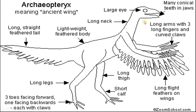In this Archaeopteryx, what features are we going to observe? First of all, there are many conical teeth in the jaws. Second character, there are large eyes. Third character, there is a long neck. The fourth character, long arms with three long fingers and curved claws — this is another feature of Archaeopteryx.